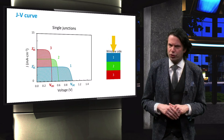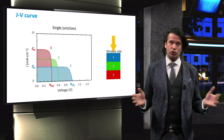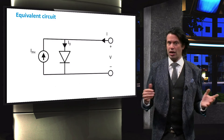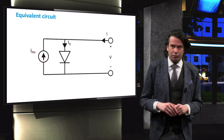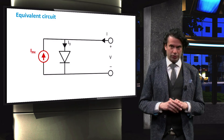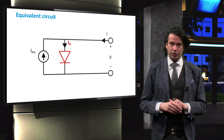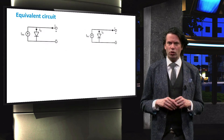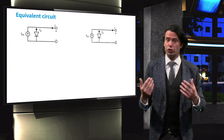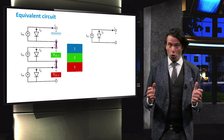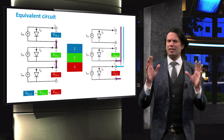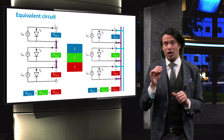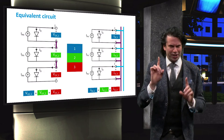Before we can draw the JV curve of the resulting triple junction cell, we must consider how the junctions are connected. We therefore look at the equivalent circuit of a semiconductor junction. As discussed in the PV energy conversion course, the photocurrent represents the photogenerated current density, while Id represents the dark current density or saturation current density. Each junction in a multi-junction device can be represented by a single equivalent circuit. The junctions could theoretically be connected in series or in parallel. However, since the junctions are stacked onto each other, they are connected in series.